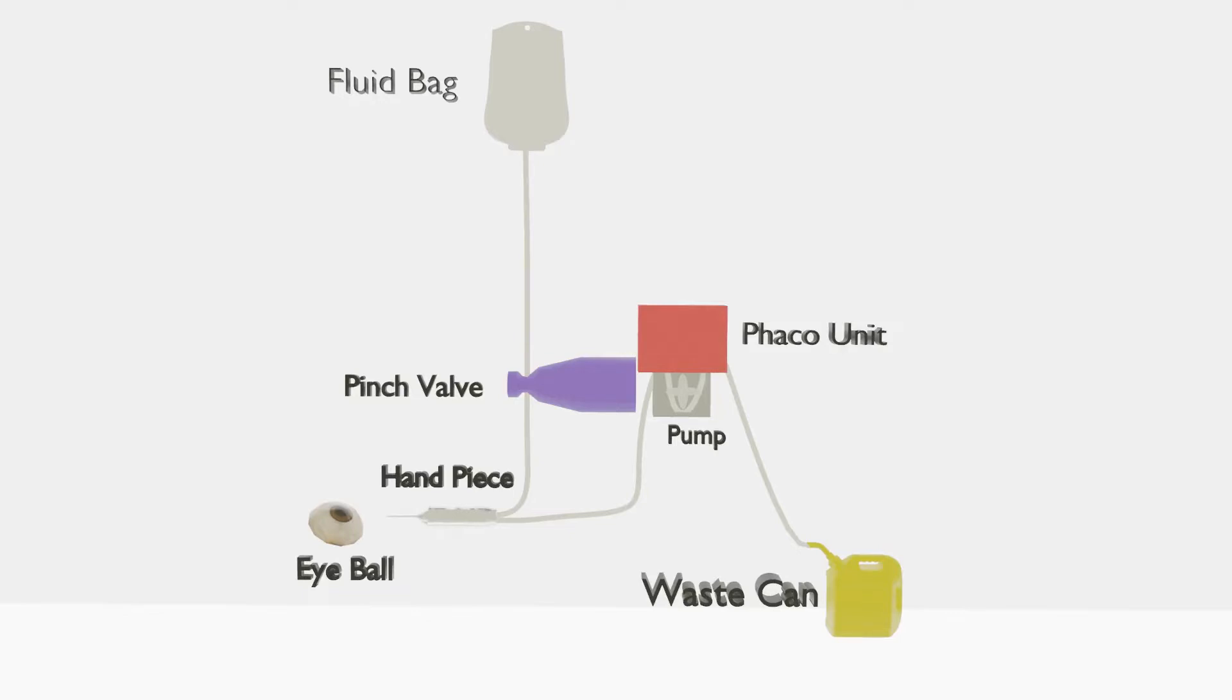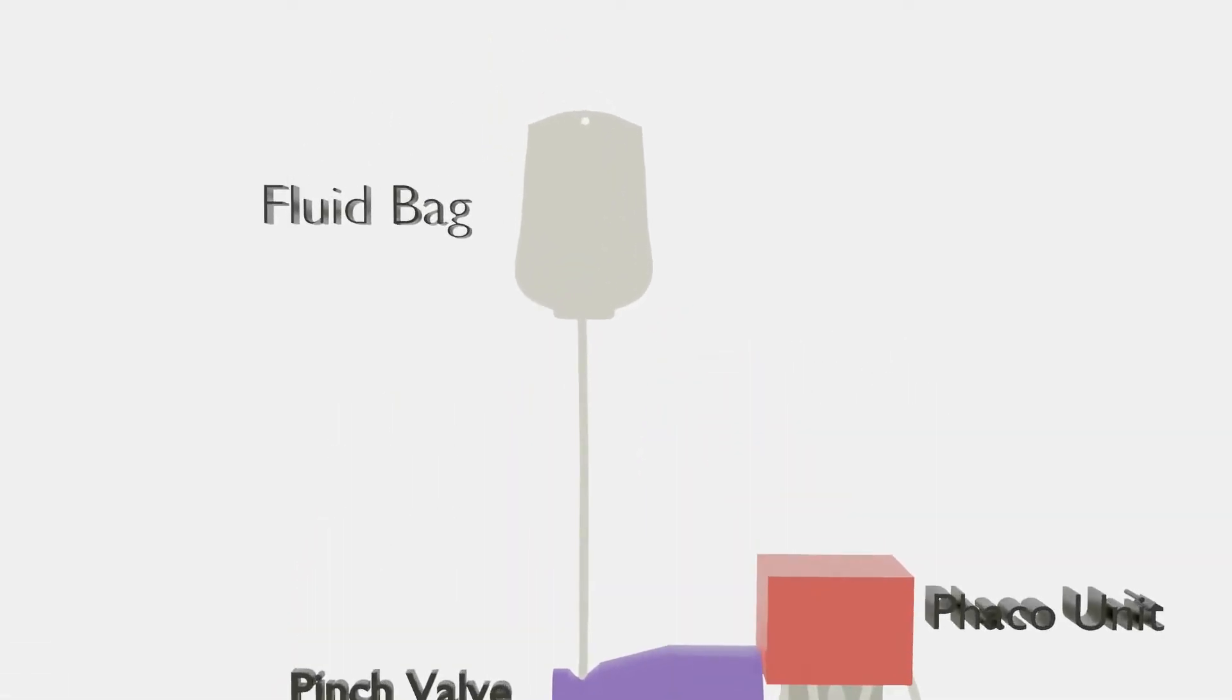First, the fluid bag. They're usually gravity-fed. A bottle of BSS is hung above the patient and gravity provides the input pressure to maintain eye volume during the surgery.